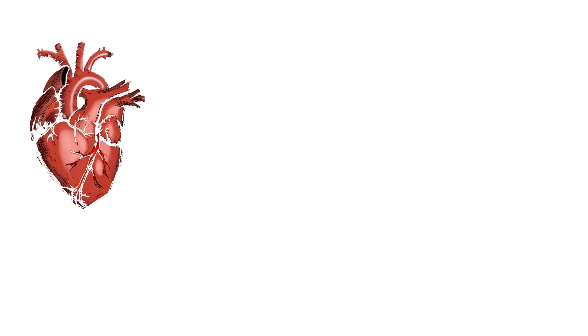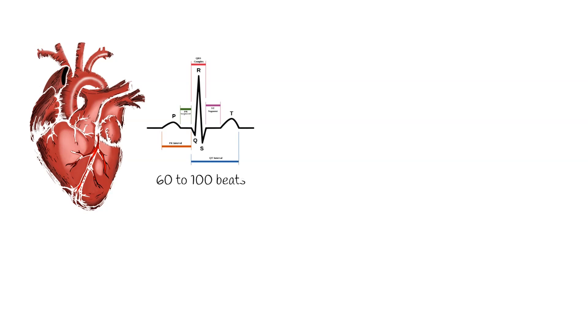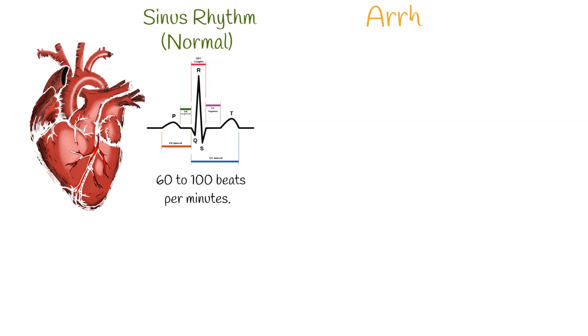The only normal rhythm of the heart is a normal sinus rhythm, usually from 60 to 100 beats per minute. Any deviation from normal rate is considered abnormal and is called arrhythmia.